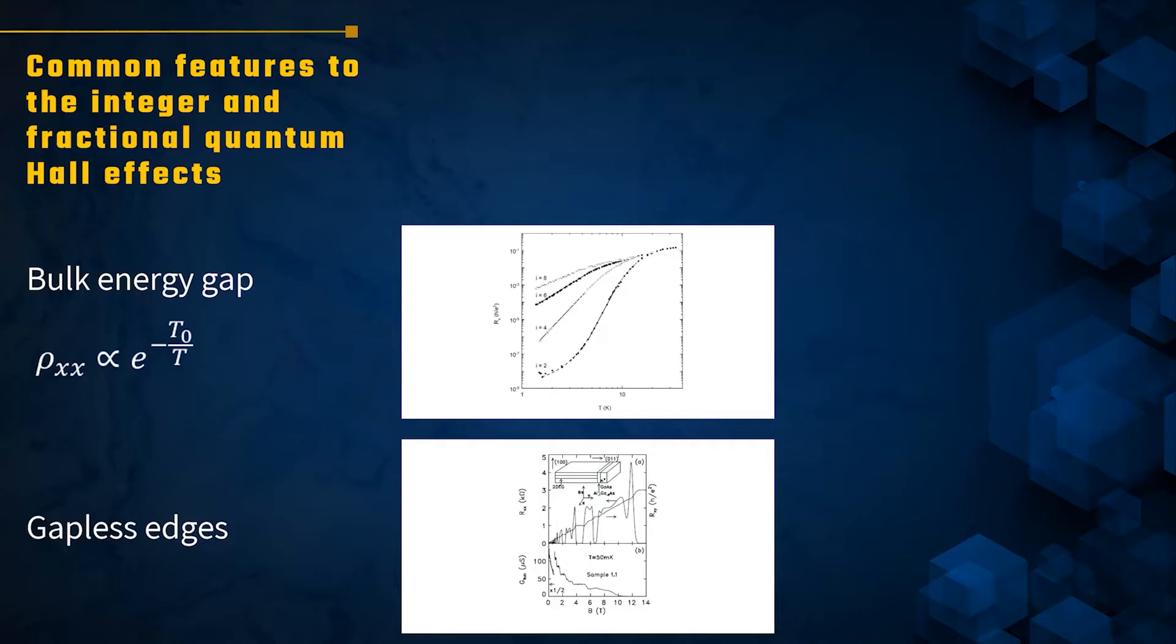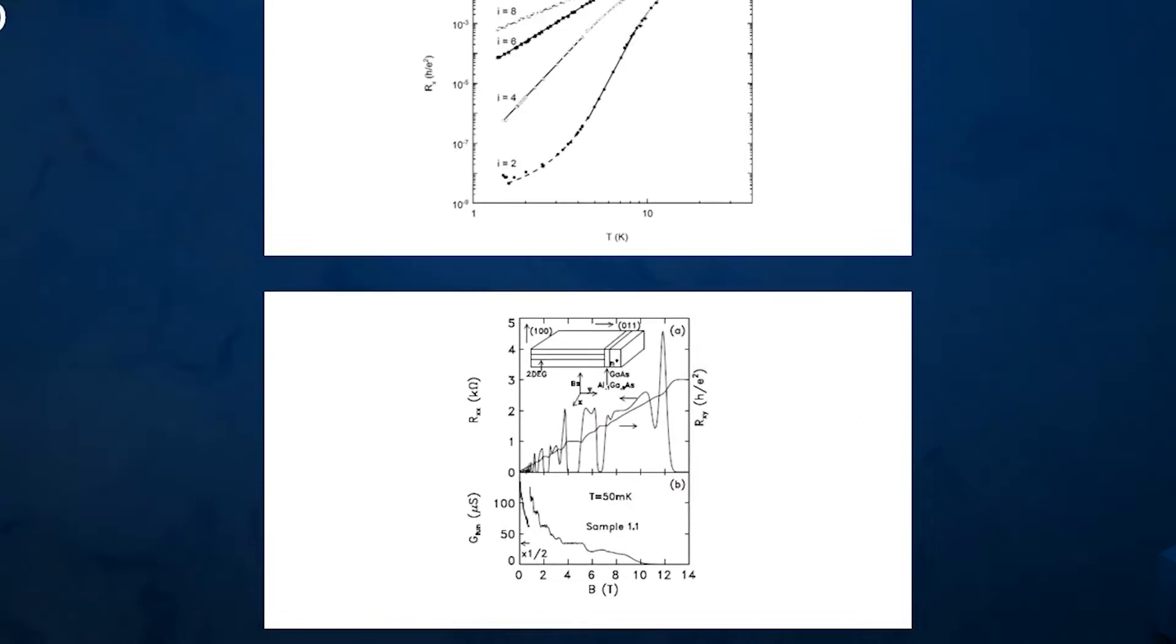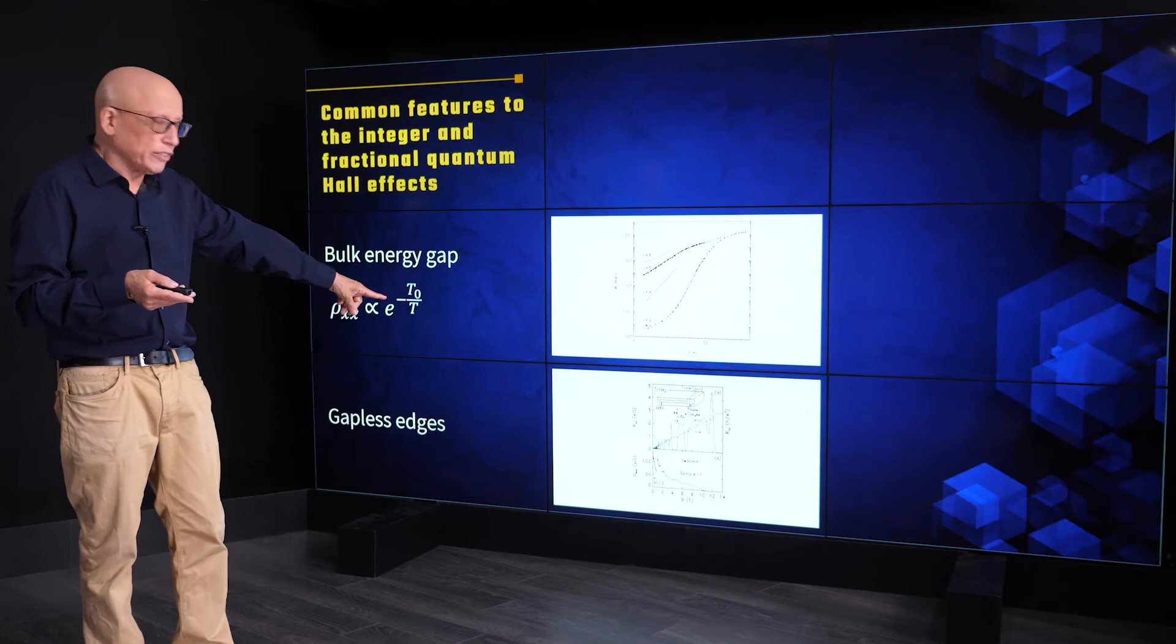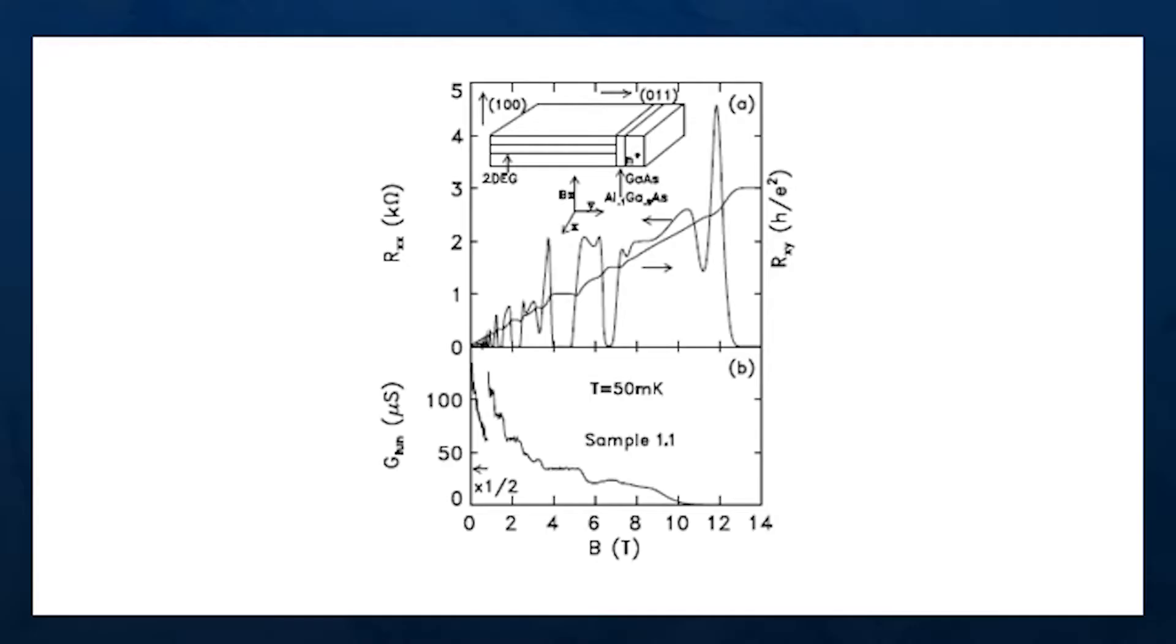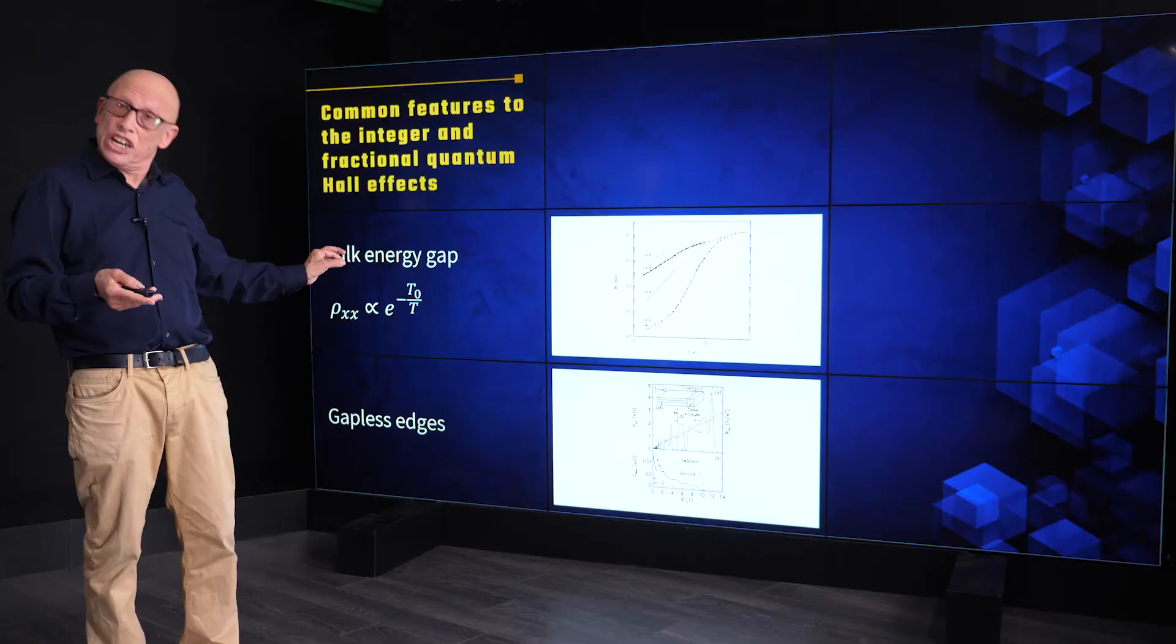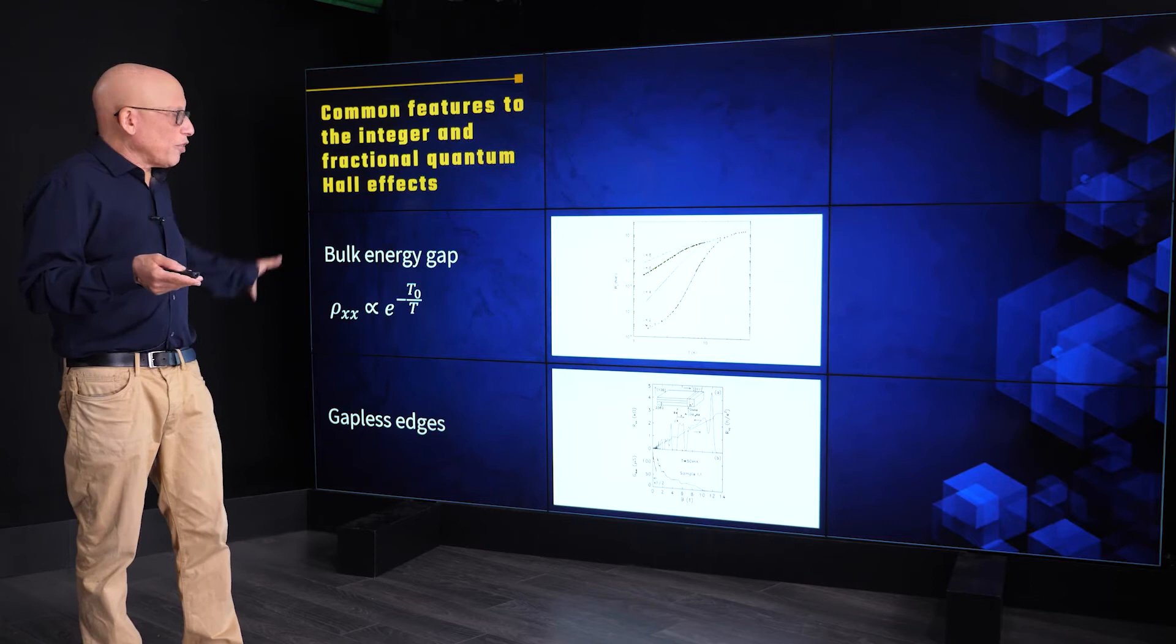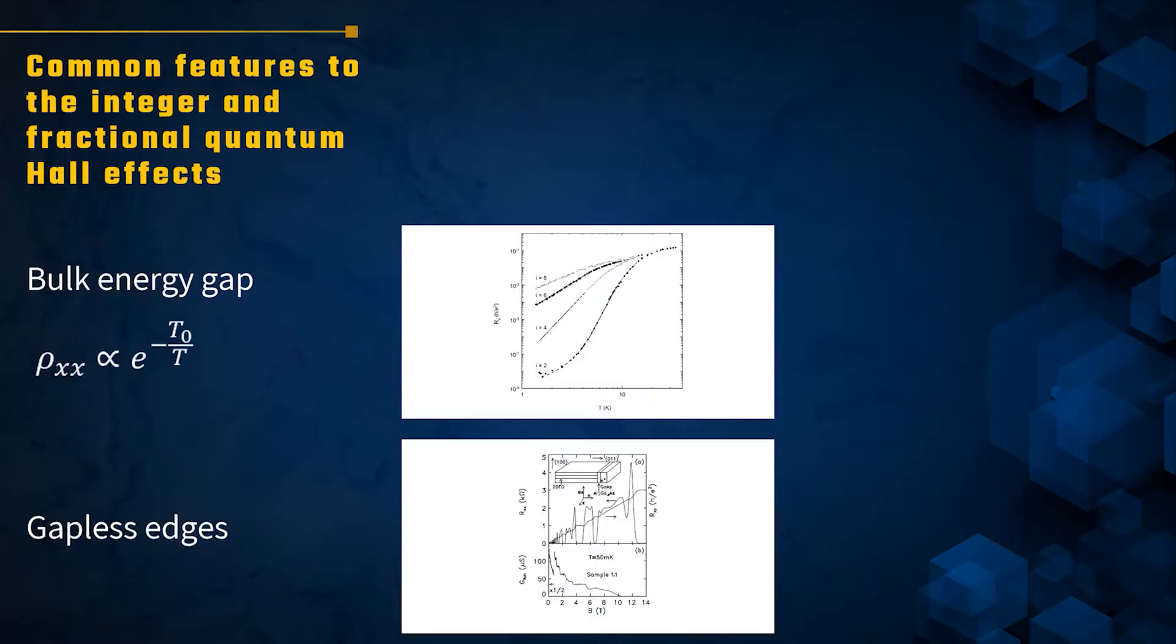In contrast, common to all quantum Hall states, integer and fractional alike, and something we will talk about in great detail in later segments, the edges of the sample are never gapped. They are always gapless. And you can see that in the plot downstairs, where you see in the upper half the longitudinal and Hall resistivity, and you see all these great happenings, things changing very dramatically as you change the magnetic field. But then in the lower part of the sample, you see the tunneling density of states into the edge. And you see that it's never zero. It changes here and there, but it's never zero, because there's no gap at the edge.